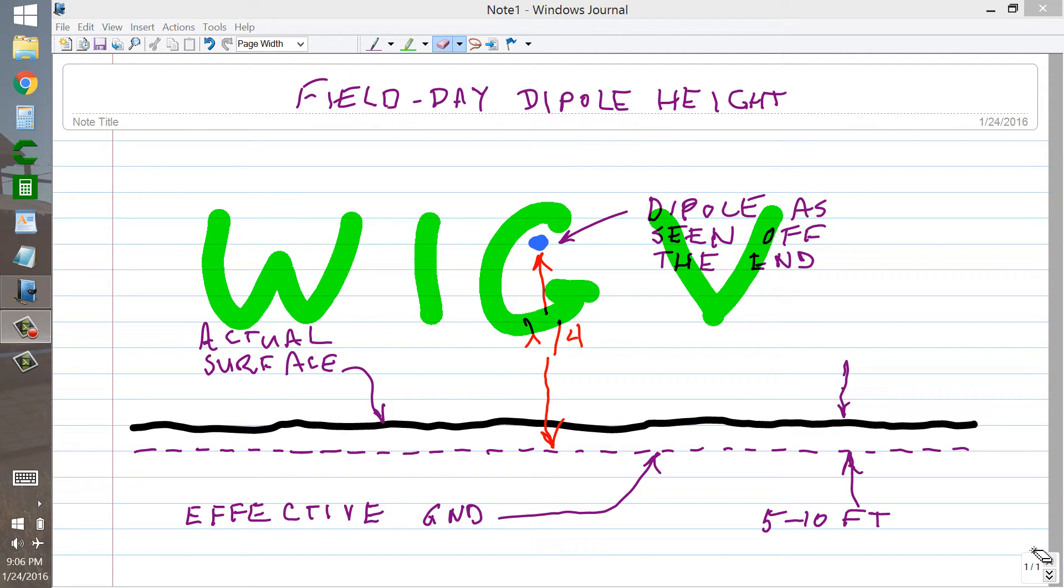Stan Gibalisco here with a little bit of advice for you on how to put up a dipole antenna for field day, particularly for 40 or 75 meters. My call sign is W1GV, Whiskey One.